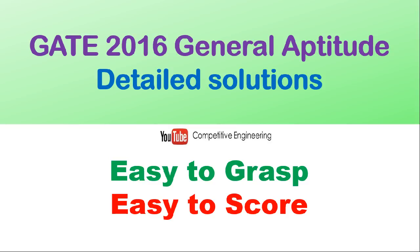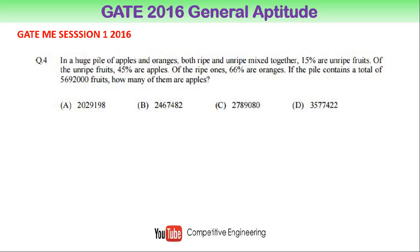GATE 2016 General Aptitude questions with detailed solutions. Here is a GATE Mechanical Engineering Session 1 question paper of 2016. Question number 4: In a huge pile of apples and oranges, both ripe and unripe mixed together, 15% are unripe fruits. Of the unripe fruits, 45% are apples. Of the ripe ones, 66% are oranges. The pile contains a total of 56,92,000 fruits. How many of them are apples?